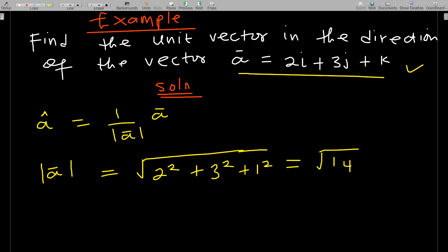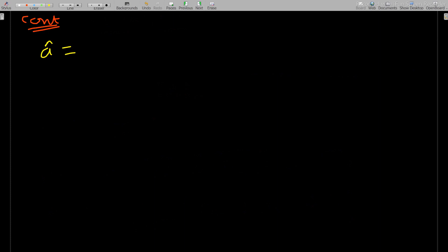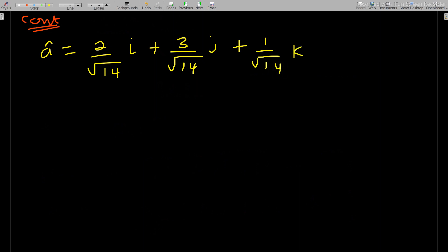That gives us the square root of 14. So the unit vector in this direction is one over the square root of 14, times (2i + 3j + k). Multiplying through, â equals 2 over √14 i, plus 3 over √14 j, plus 1 over √14 k.